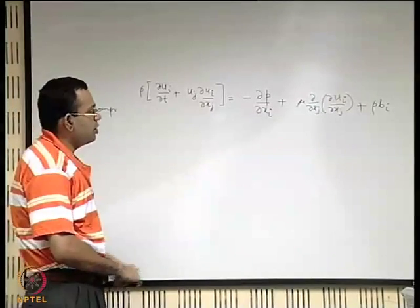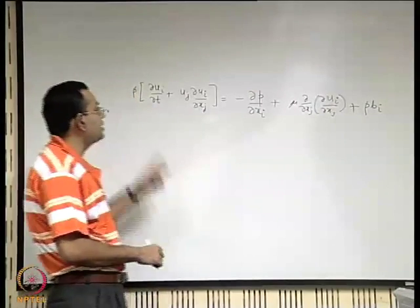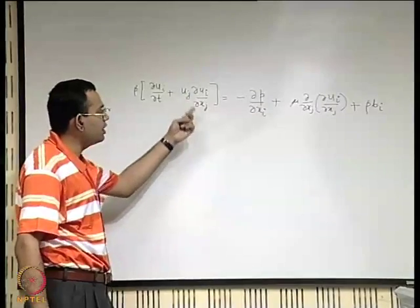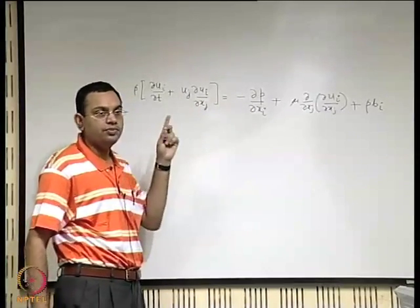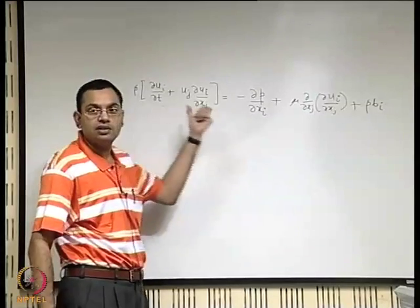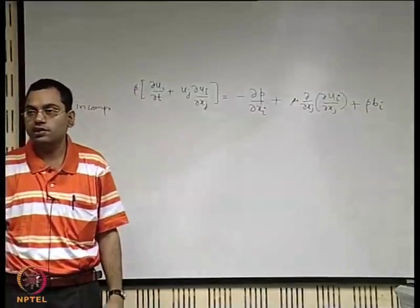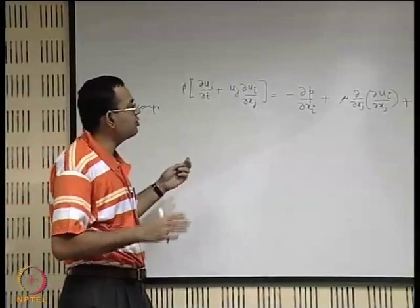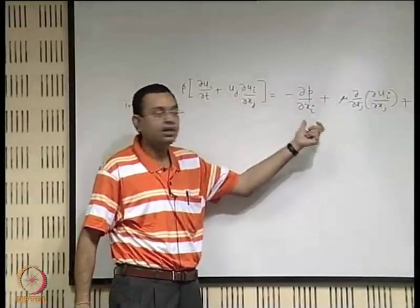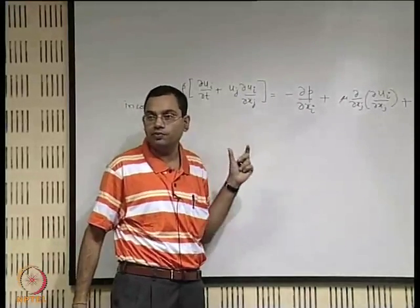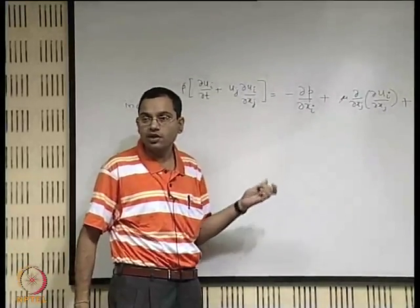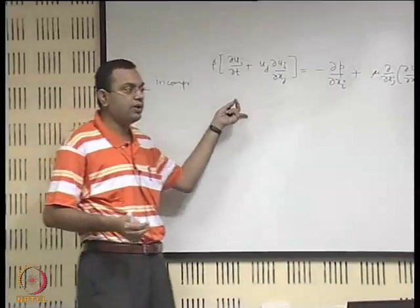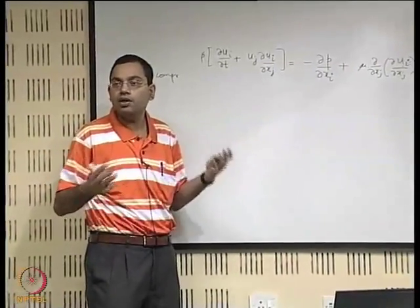It is also not a bad idea to write this in terms of vector form, because the form written in terms of indices i and j is an elegant Cartesian index notation. But if you have a curvilinear coordinate system or a non-orthogonal curvilinear coordinate system, these types of index notations will not work. Vector form is general — it will be valid independent of the coordinate system.